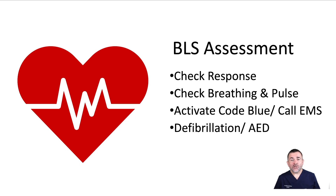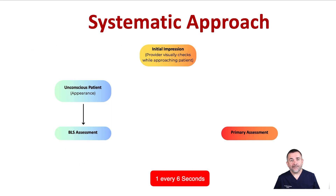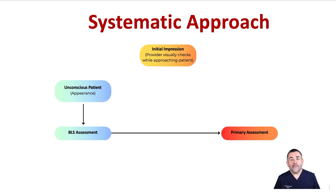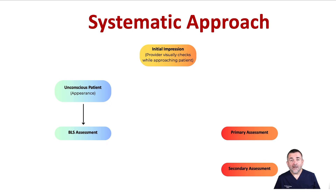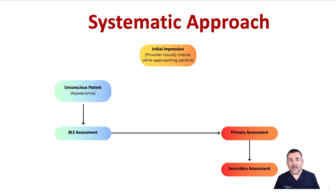If you determine the patient is not breathing normally but has a pulse, bypass chest compressions and support the patient by ventilating once every 6 seconds. If the patient has a pulse and is breathing, move to the primary assessment. In some cases BLS will result in ROSC, but sometimes cardiac arrest persists, requiring us to continue with more advanced invasive measures. This is when you should follow the primary assessment and secondary assessments.